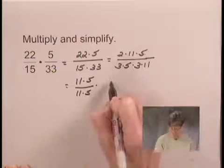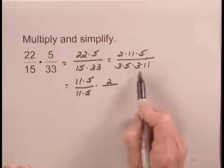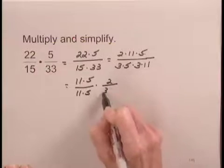What remains in the numerator is a factor of 2. And in the denominator, after I remove the 11 and the 5, I have 3 times 3.